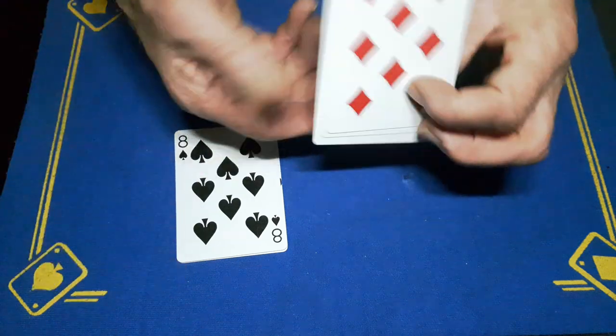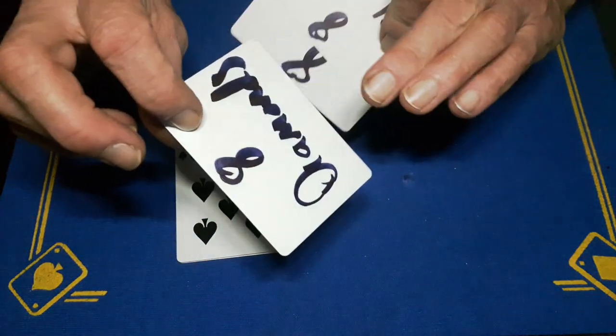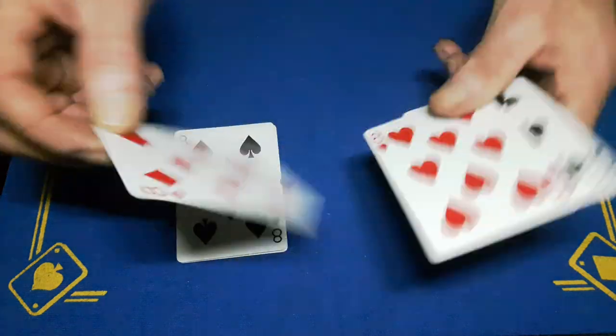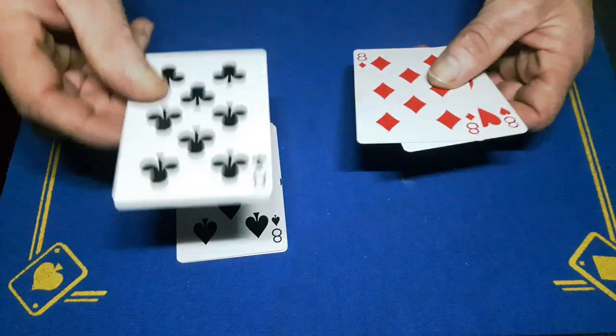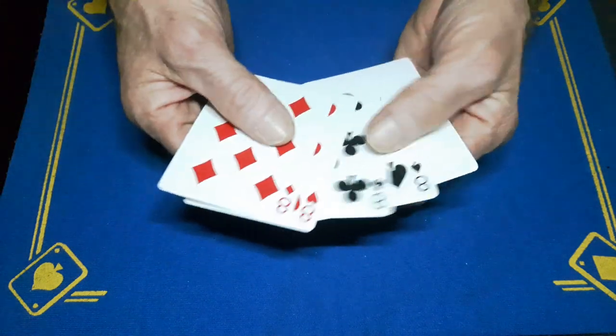We've then got three regular faced blank cards with a corresponding whatever this is written on the back. So we've got the club, the heart, and the diamond. So you're in this position.